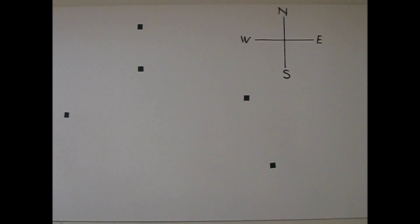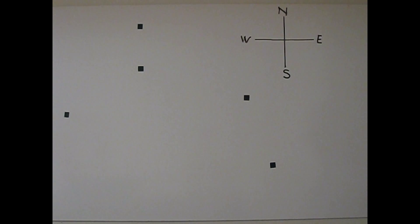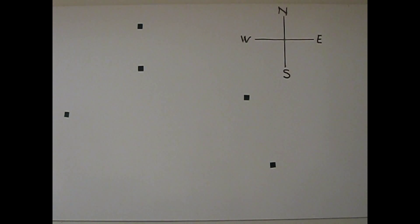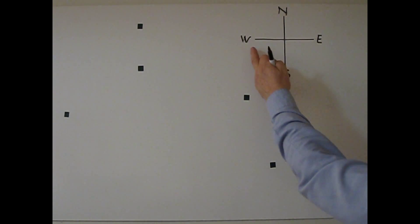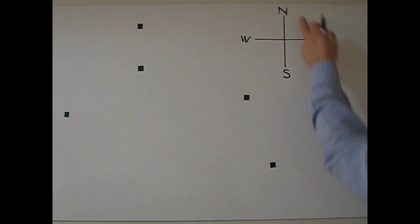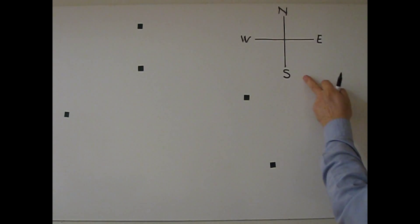I am going to talk about vector addition by using the component method. Let's say this is a map, with west, east, north, and south directions.